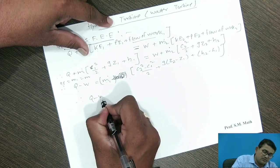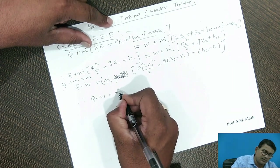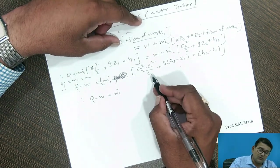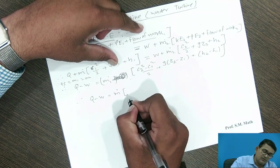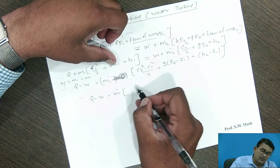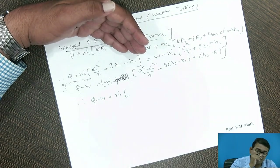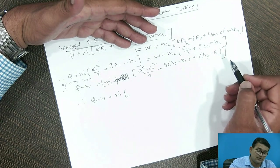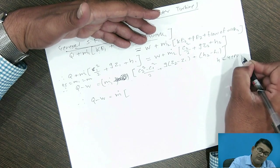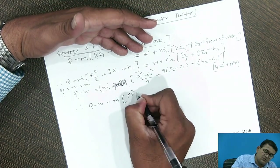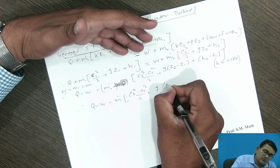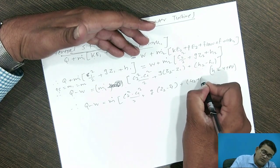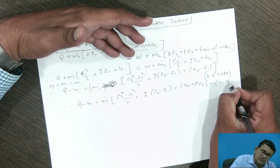From this general equation, Q minus W equals mass m — because mass entering equals mass leaving. Substituting H equals U plus PV, and writing the enthalpy terms explicitly: C2 squared minus C1 squared over 2, plus g times (z2 minus z1), plus (U2 plus P2V2) minus (U1 plus P1V1).